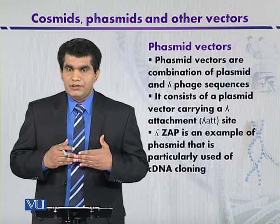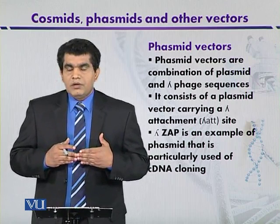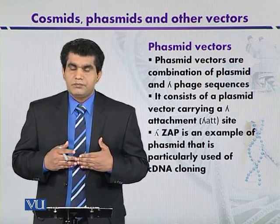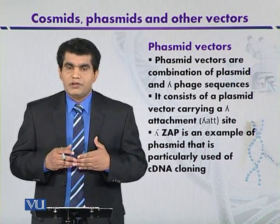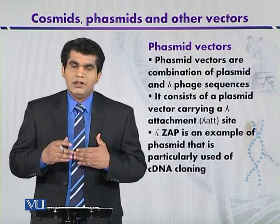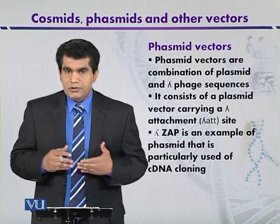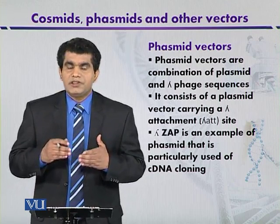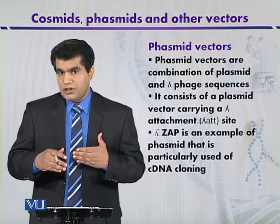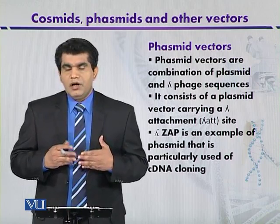Such unique combinations of plasmid with the lambda genome are called phasmids. Phasmids are very important in cloning procedures because they have certain advantages over other lambda vectors. Recombinant DNA packaged inside phasmids is more stable and has an increased shelf life. At the same time, screening by hybridization is easier compared to bacterial plasmids.